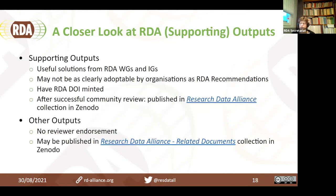Supporting outputs are also useful solutions that don't have to demonstrate adoption. They also have an RDA DOI minted at the start of the endorsement process and, after successful community review, are published in the Research Data Alliance collection in Zenodo. Other outputs have no review and are not endorsed by RDA, but we have quite a few in the Research Data Alliance related documents collection in Zenodo. These can include posters, presentation slides from a plenary session, or papers that the group or some members have written.